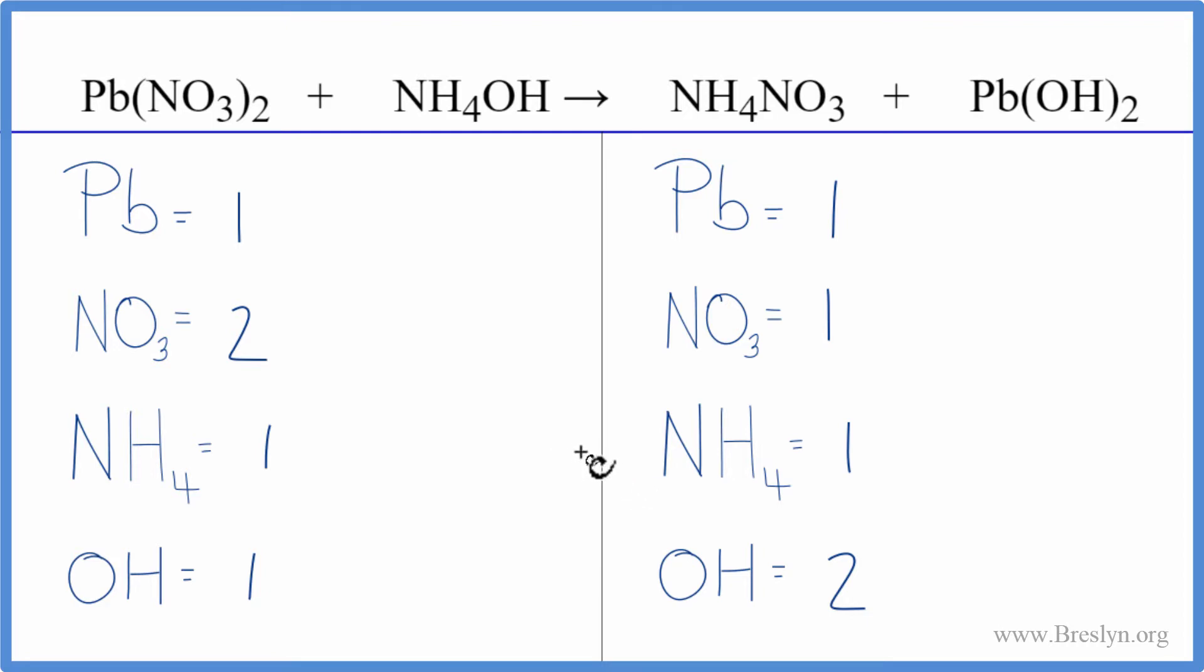To balance it, why don't we balance the nitrates first? We have two here and one here, so I'll put a two as my coefficient. One times the two gives me two of those. Those are balanced.